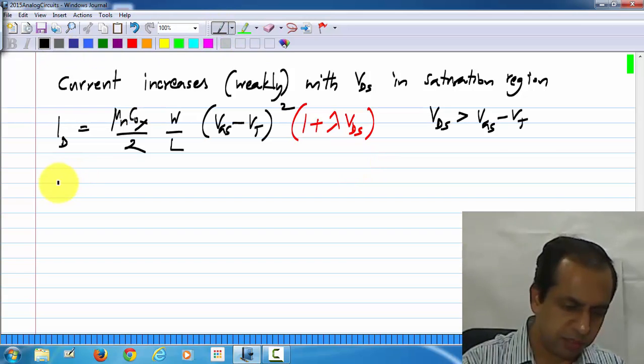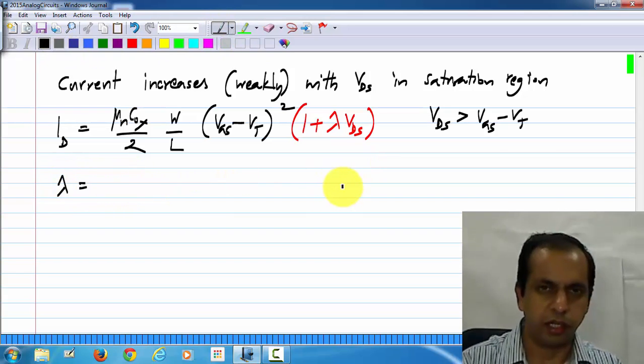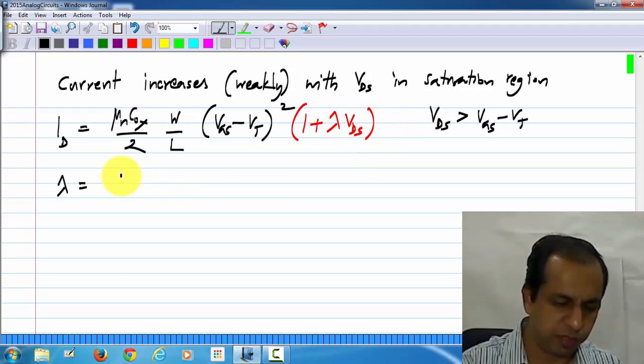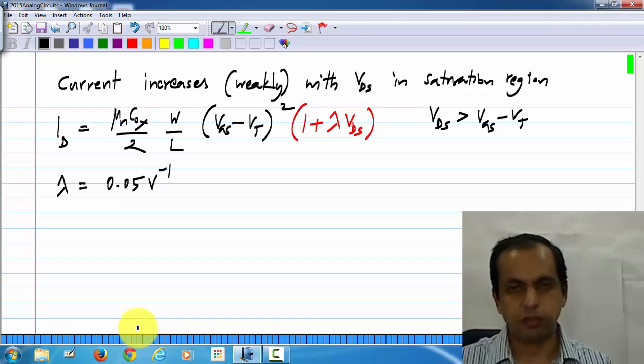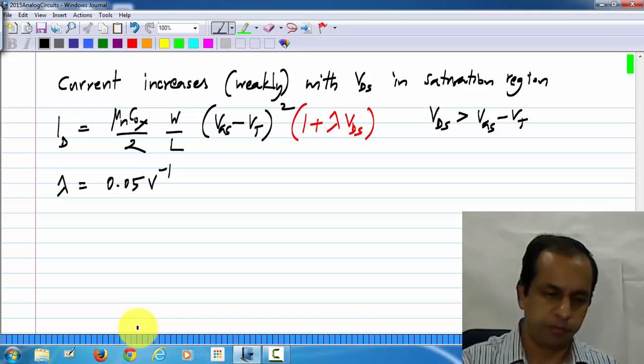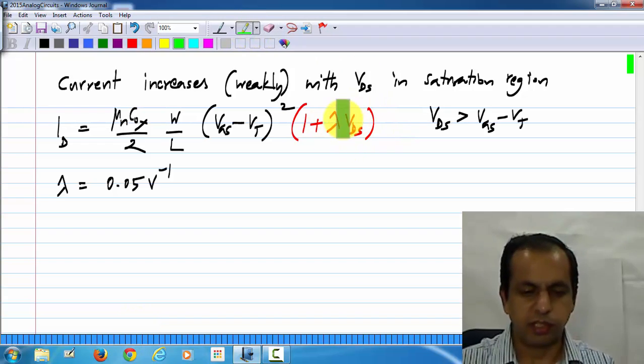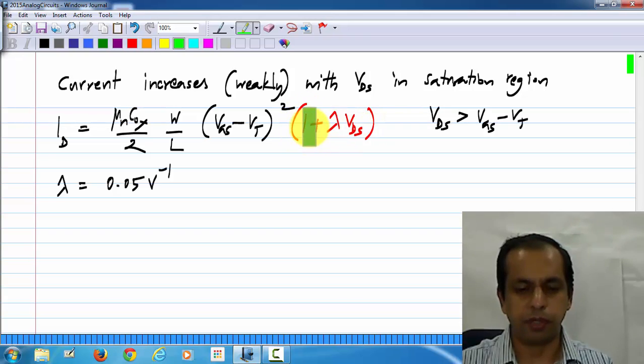And the units of lambda are in inverse volts, and this is typically a small number. Let's say something like 0.05 inverse volts or something like that. So that this correction is still usually small compared to 1.